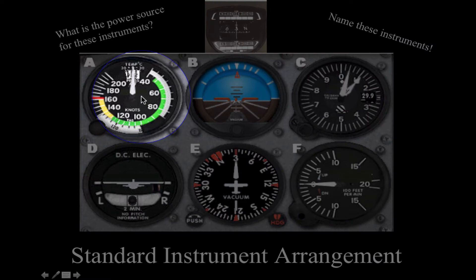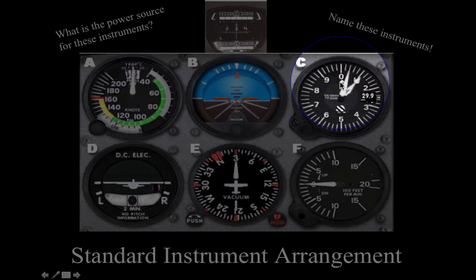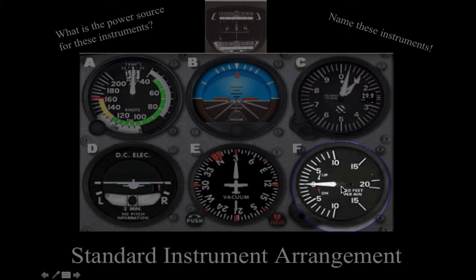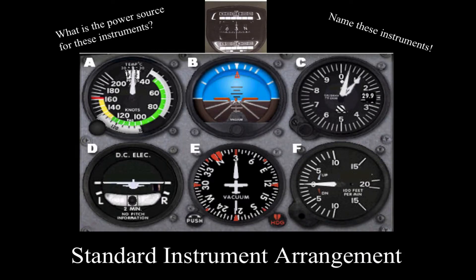The airspeed indicator works off of the pitot-static system. There's a pressure sensitive wafer inside that instrument, and so does the altimeter, and so does the VSI, the vertical speed indicator. They all have pressure sensitive wafers in there that expand or contract due to pressure changes. The airspeed indicator is the only one that uses both pitot and static. The altimeter uses static pressure only, and the VSI static pressure only.